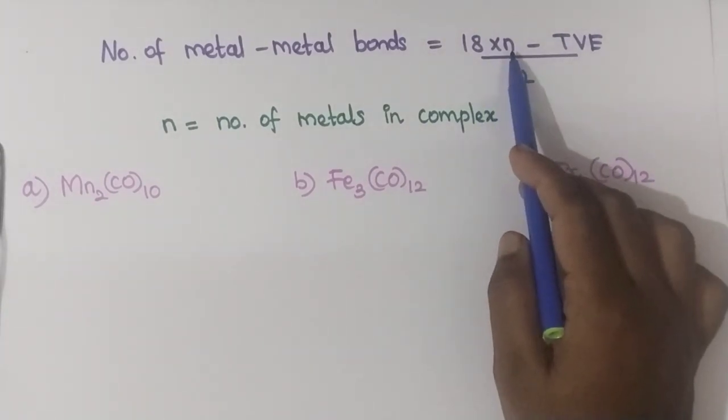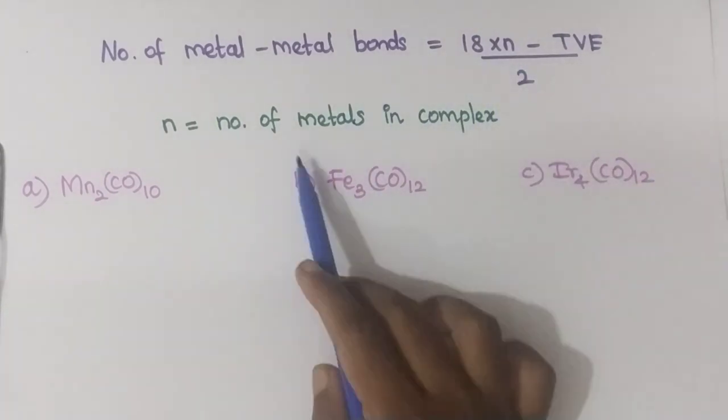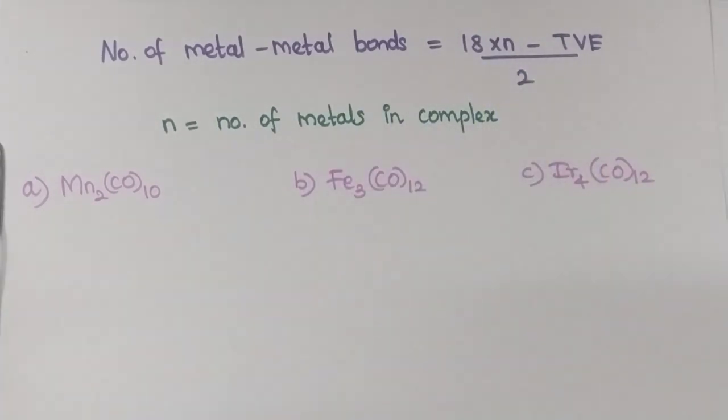Here, what is n? n is the number of metals in the complex — n is nothing but the number of metals in the complex.